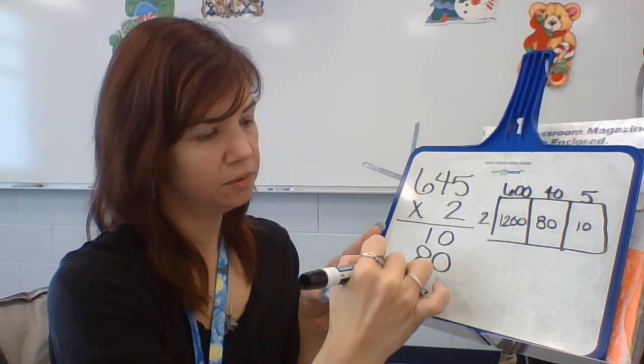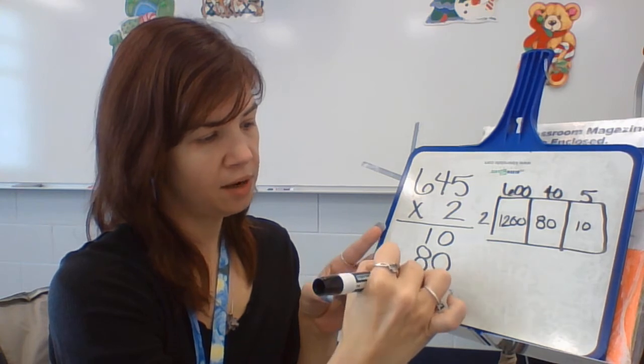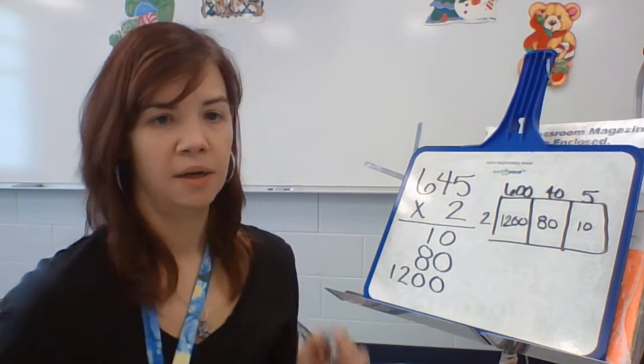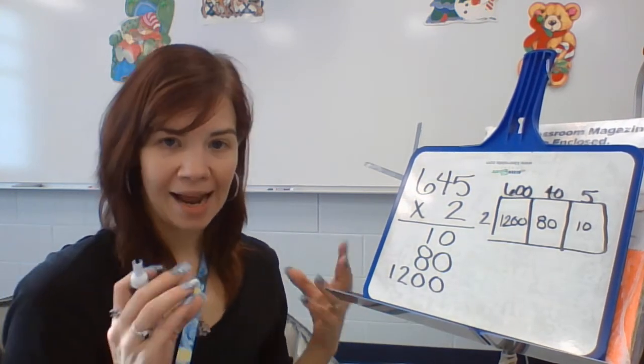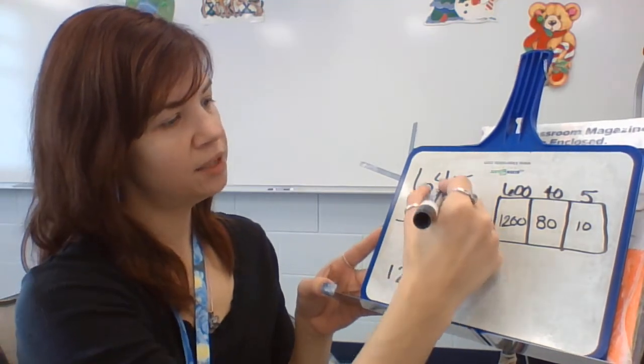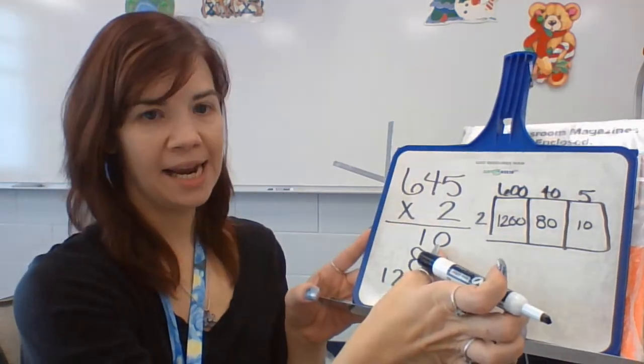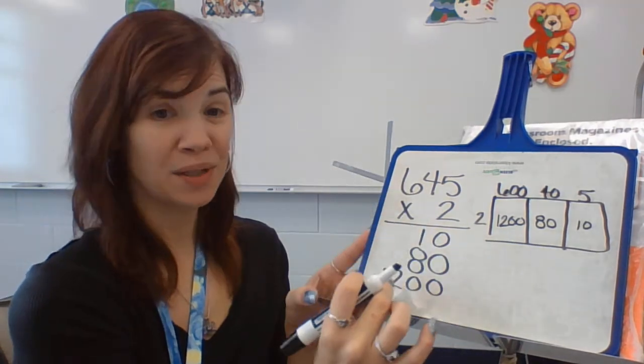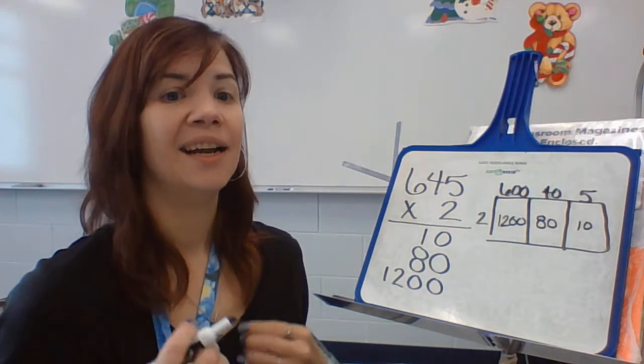6 times 2 is 12. And there's some zeros. And how we got these numbers is when I took 4 times 2, it's 8, but it's in the tens place. So it's not just 8, it's 80.